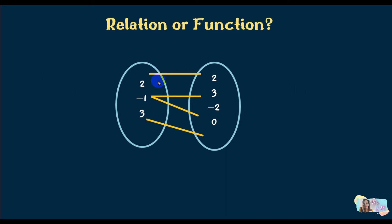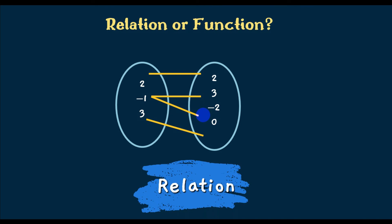Another mapping diagram: 2 pairs with 2; negative 1 has two partners, positive 3 and 0; and 3 pairs with 0. Since negative 1 has two partners in y, there is a one-to-many correspondence, meaning this is a relation only — not a function.